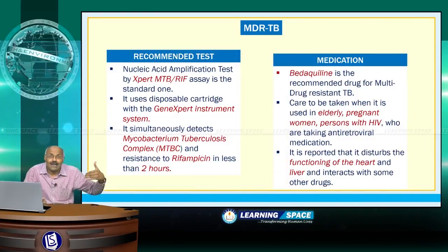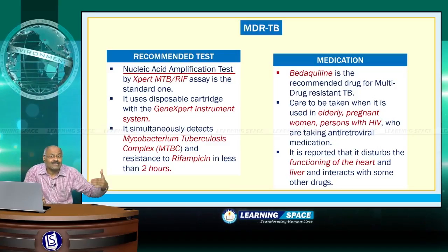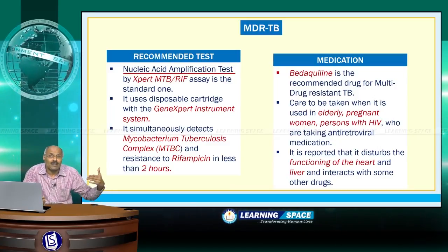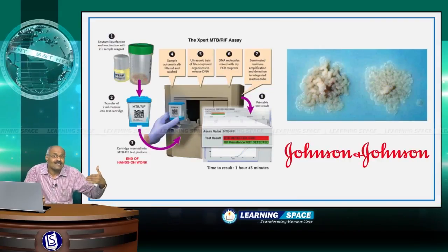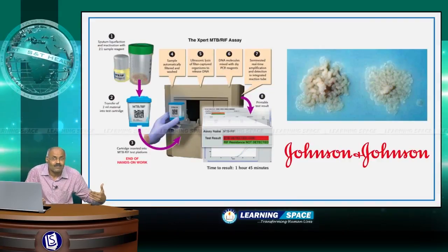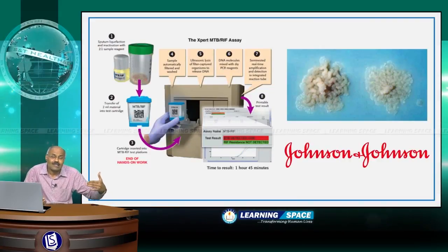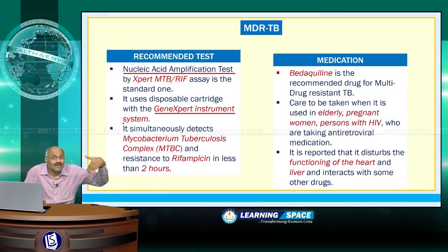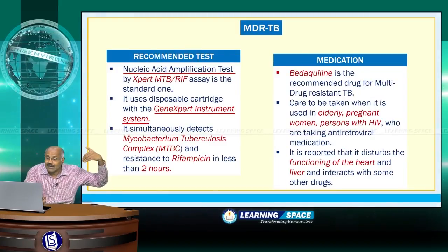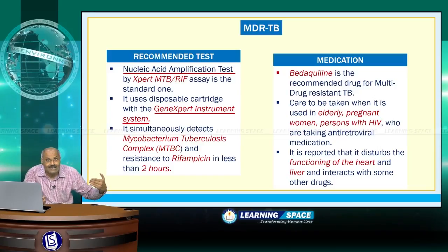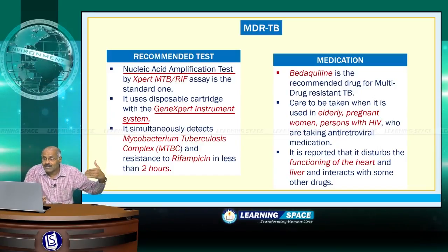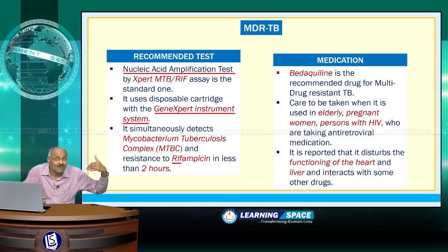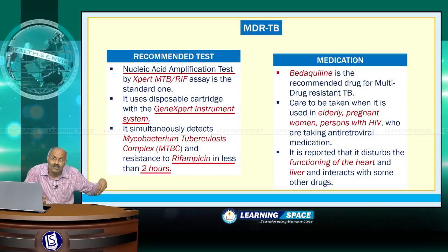The recommended test for MDR-TB is the Nucleic Acid Amplification Test by Xpert MTB/RIF, which is the standard diagnostic tool. It uses a disposable cartridge with the GeneXpert instrument system and simultaneously detects Mycobacterium tuberculosis complex and resistance to rifampicin in less than 2 hours.